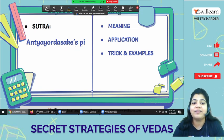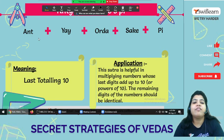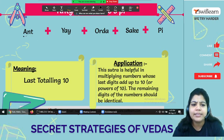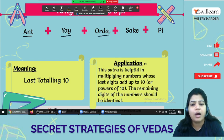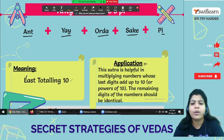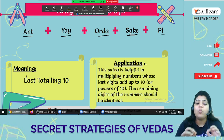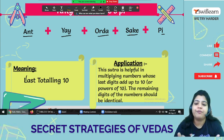Let's see what's the meaning of Antyayordasakepi. So let's break this one. Antyayordasakepi, the meaning is last totaling 10. It's not only 10, it's a power of 10.